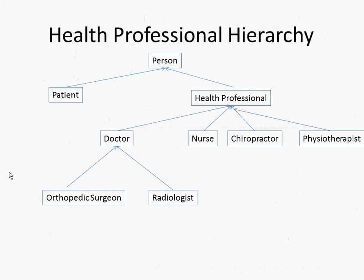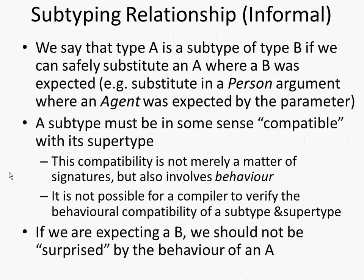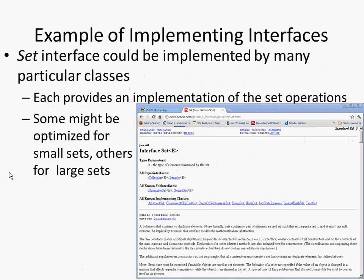Another thing we're going to be talking about is the fact that person itself, by virtue of being an implementation of an agent, means any person can be used where agents are expected. For example, the connect-to method that we use to connect up persons is actually an operation on agents. Any type of agent class — be it a deer, a doctor, a person, a patient, or a city — we can call connect-to on that and it will just work. So we can have this reuse.